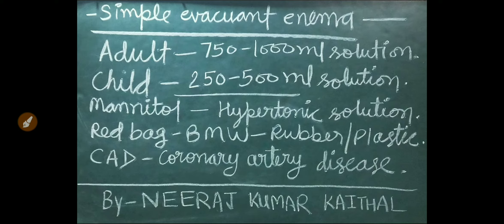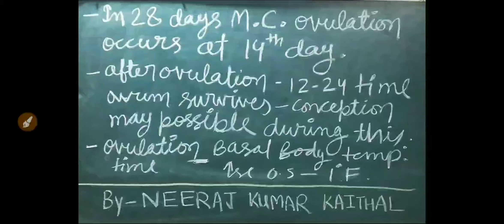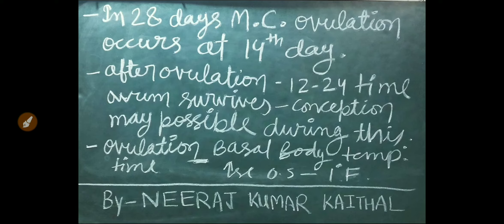CAD stands for coronary artery disease. In a 28-day menstrual cycle, ovulation occurs at the 14th day. After ovulation, the ovum can survive up to 12 to 24 hours, and during this time conception may be possible.